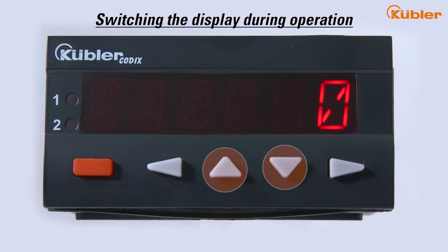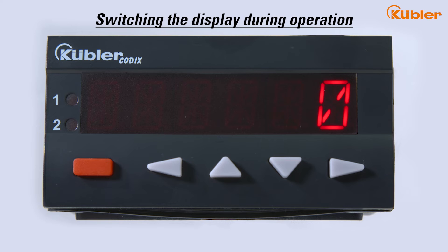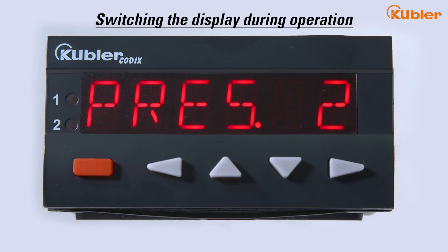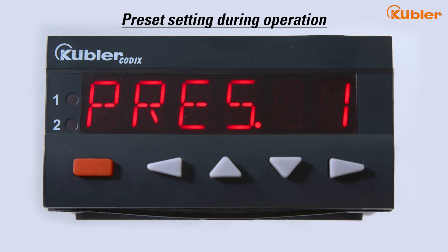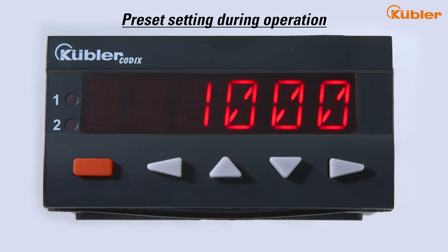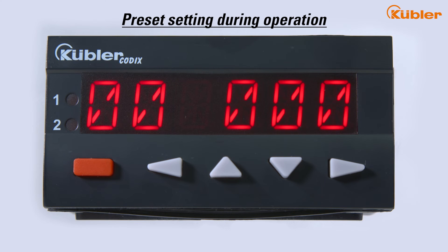By pressing the up or down keys once during operation, the currently selected display function appears in the display for two seconds. If the up or down keys are pressed a second time within these two seconds, the display switches to the next or previous display function. While operating, select the desired display function PRESET1 or PRESET2 to change the corresponding preset. Use the right and left keys to select the respective decade — the selected decade flashes. With the up or down keys, the respective numerical value can be set. The selected setting is accepted by pressing the enter key or automatically after two seconds.